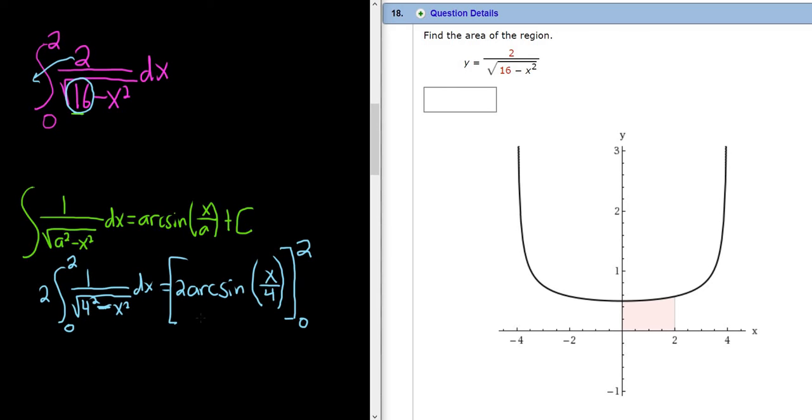All right, good stuff. So first we plug in the 2, so we get 2 arc sine of 2 over 4 minus 2 arc sine of 0 over 4. I didn't skip any steps. I figured, you know what, let's go ahead and show every little step. So first you plug in the 2, then you subtract, then you plug in the 0.